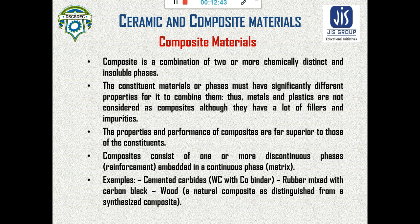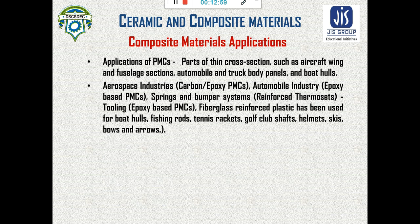Other examples of composites include cemented carbide, rubber mixed with carbon black, and wood, which is a natural composite. Composite materials are used in parts of thin cross-section such as aircraft fuselage sections, automobile and truck body panels, and boat hulls. In aerospace and automotive industries, spring and bumper systems, tooling, and fiberglass-reinforced plastic have been used for boat hulls, fishing rods, tennis rackets, golf club shafts, helmets, and skis.